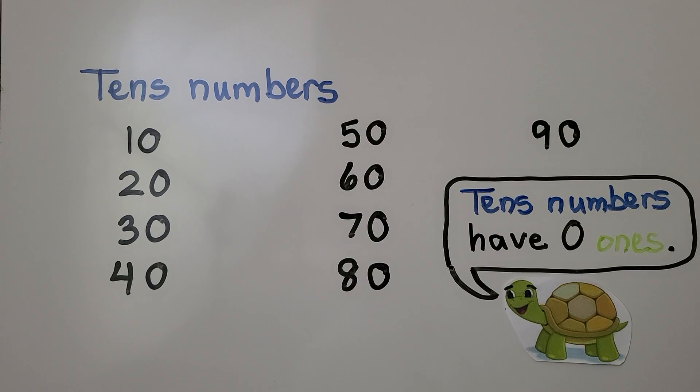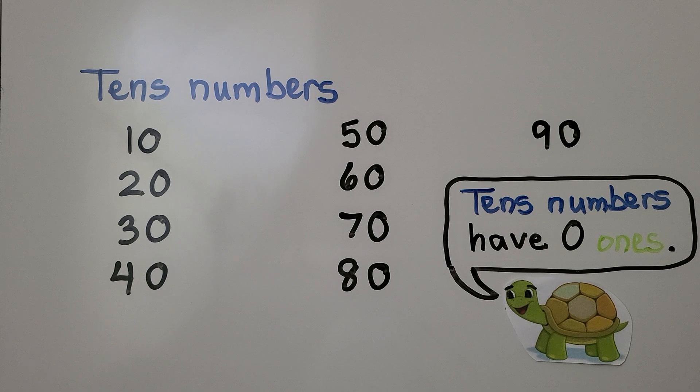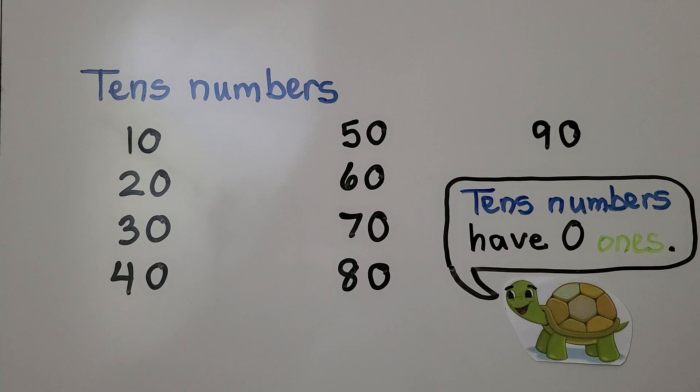Remember, a tens number has zero ones. Tens numbers are like 10, 20, 30, 40, 50, 60, 70, 80, 90. Those are all tens numbers.